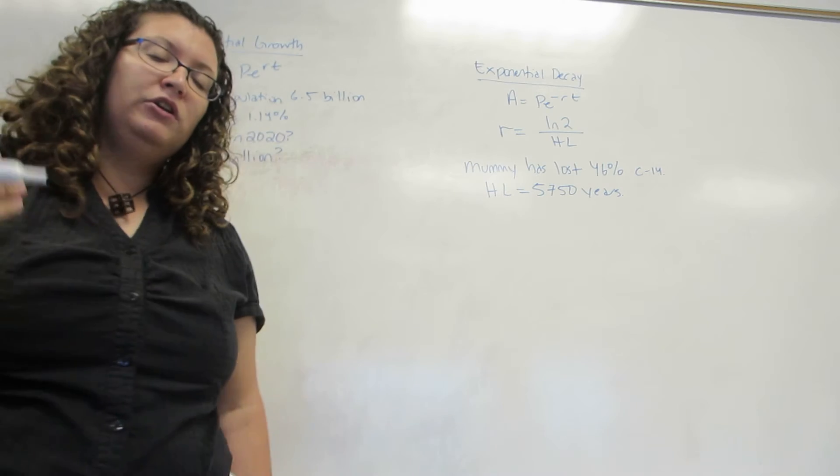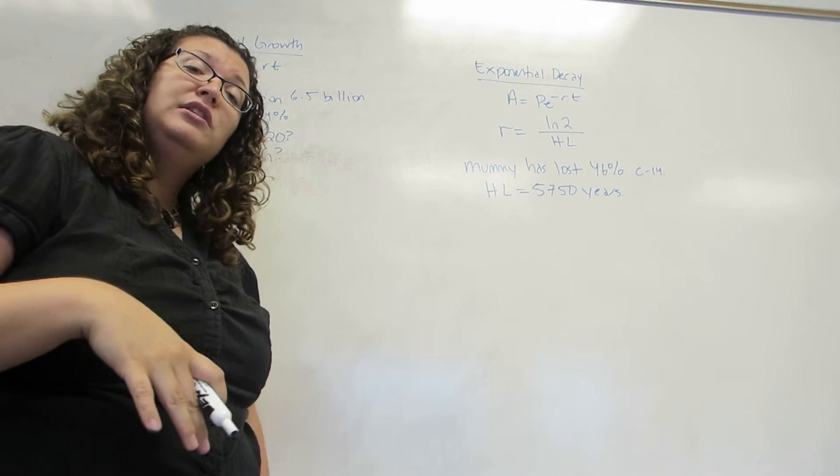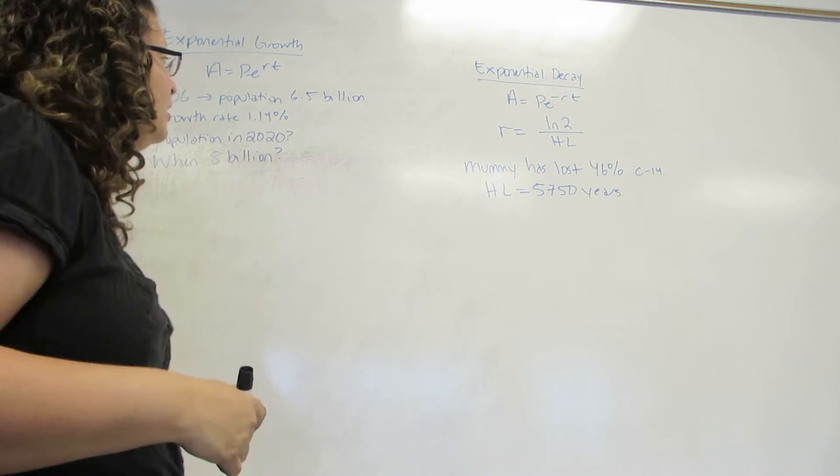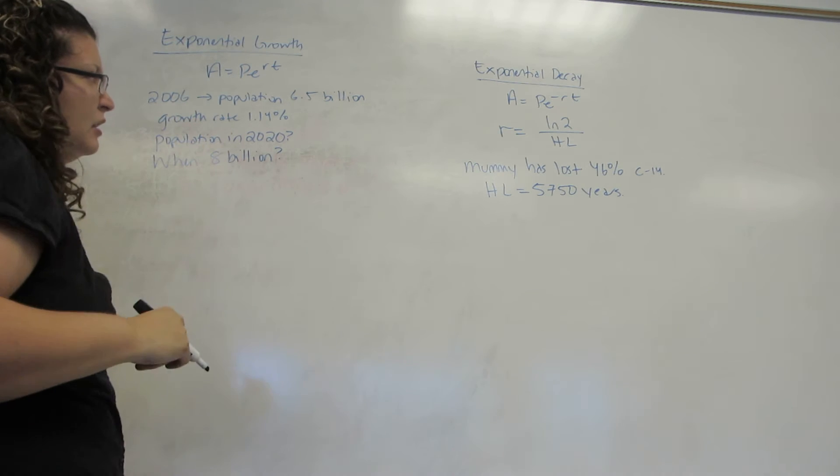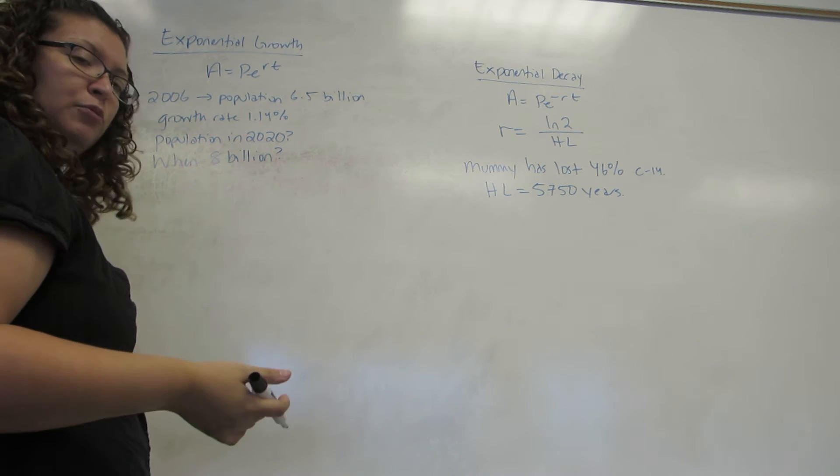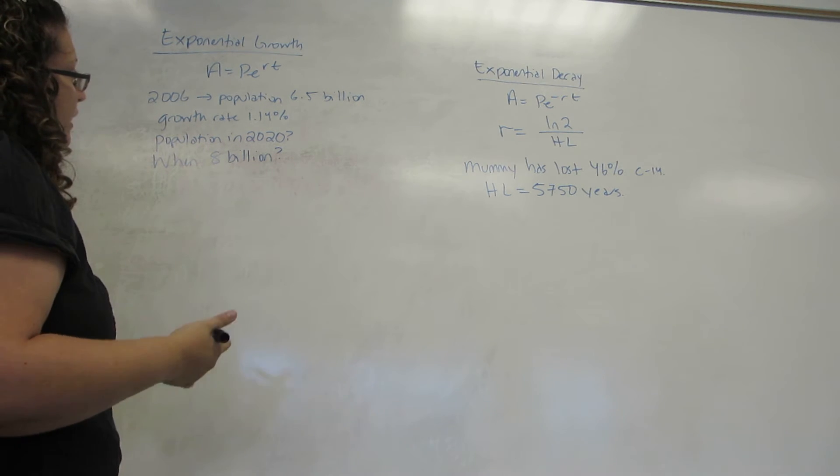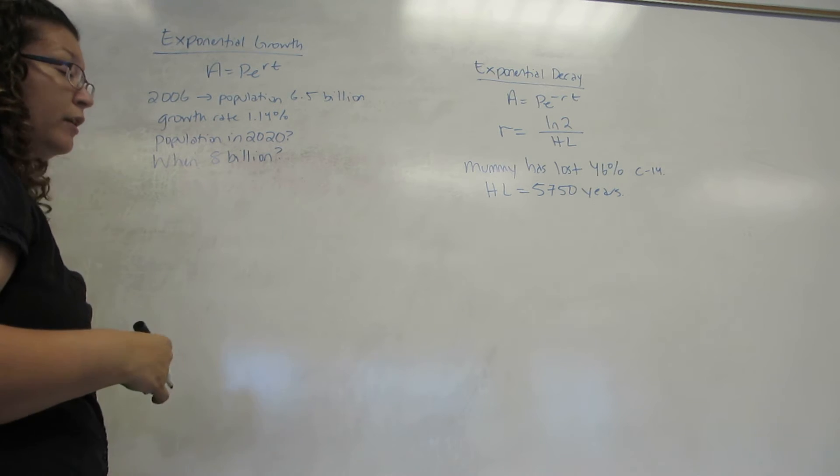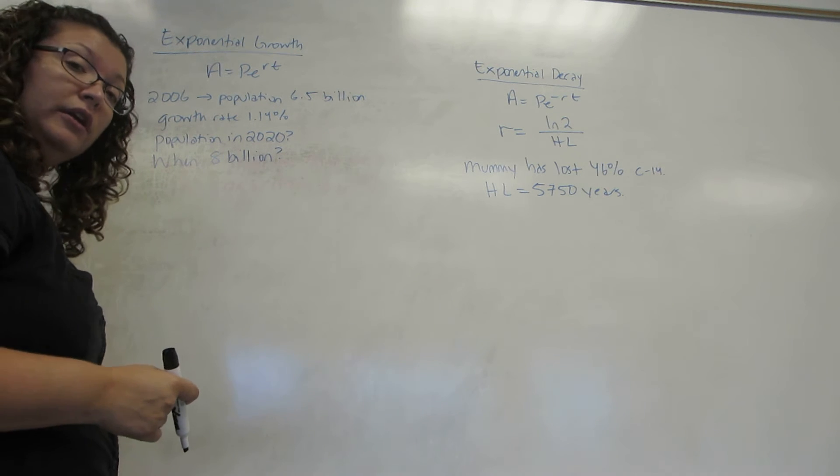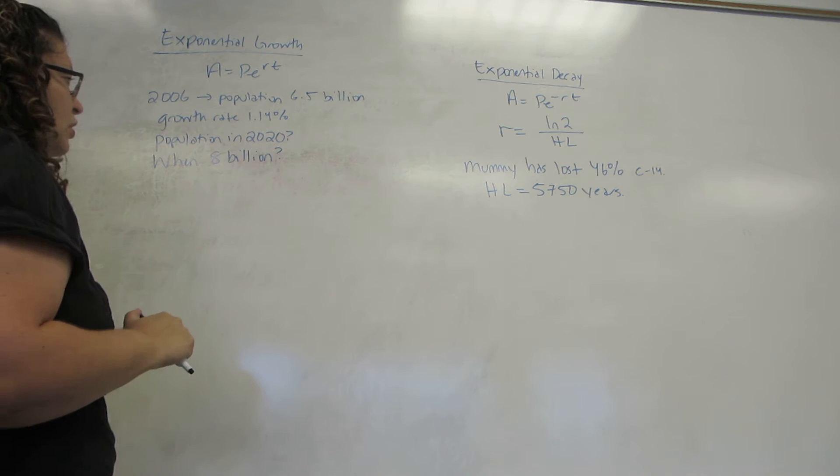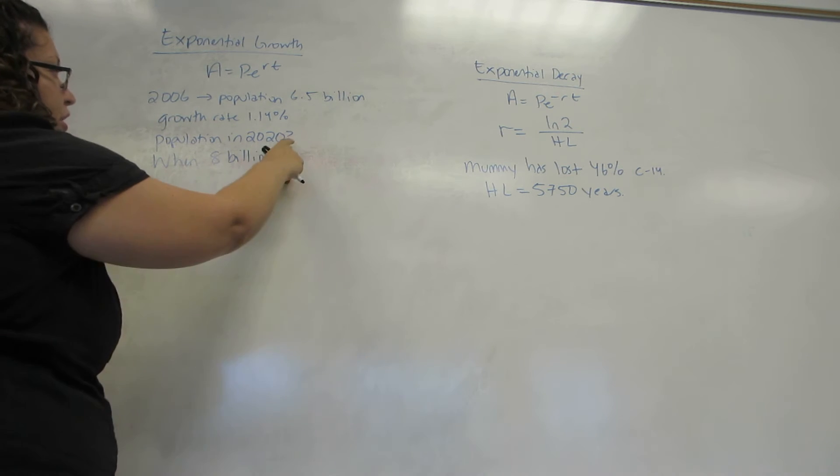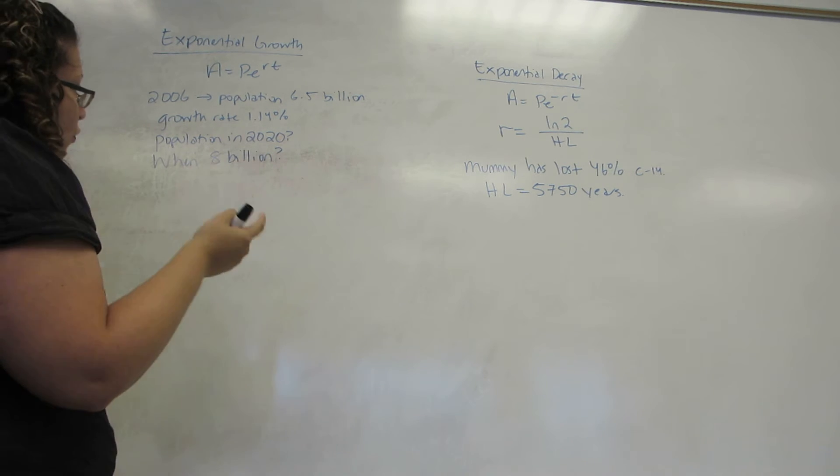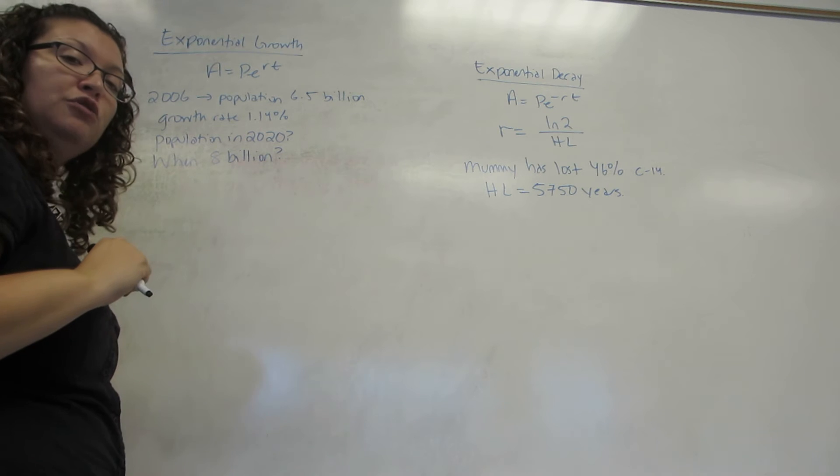Now, let's do an exponential growth formula. Generally, this is population. So, in 2006, the world population was about 6.5 billion. Assuming an exponential growth rate of 1.14% per year, we want to know two things. What do we estimate the population will be in 2020, and when do we estimate the population will reach 8 billion.